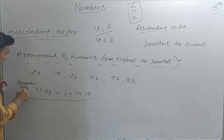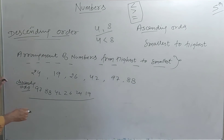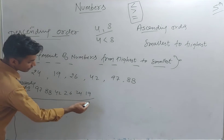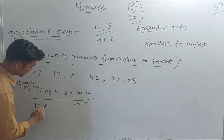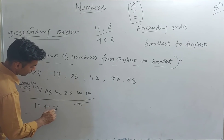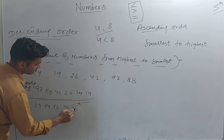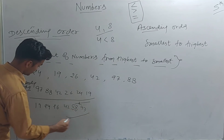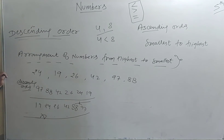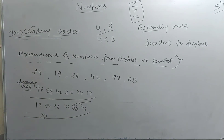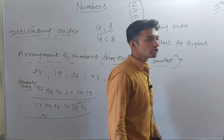For ascending order, it is just the reverse: 19, 24, 26, 42, 88, and finally 97. So that is our ascending order. These were examples with two-digit numbers.